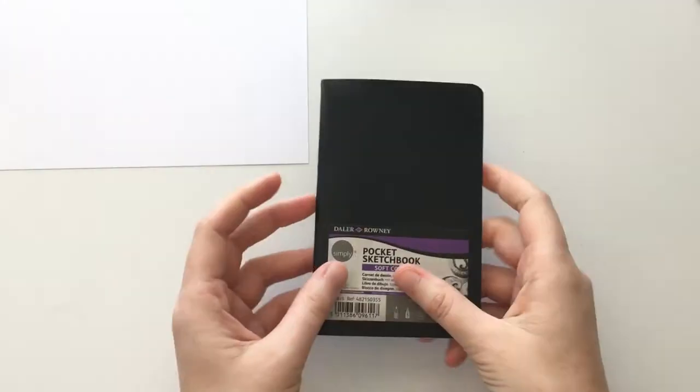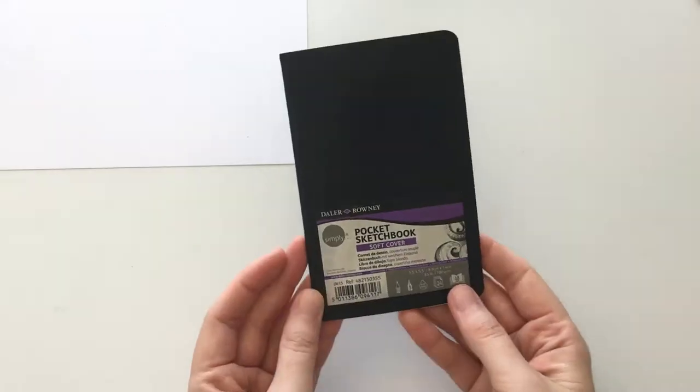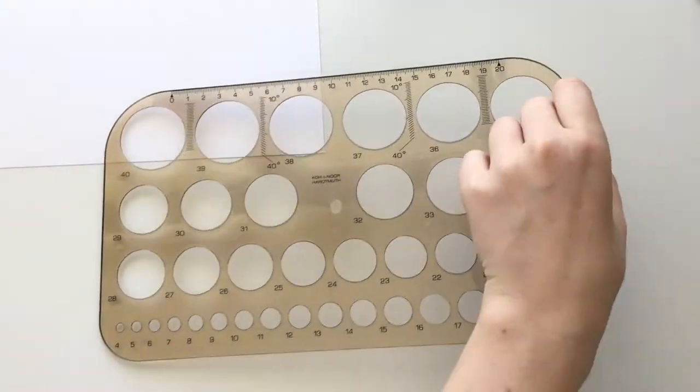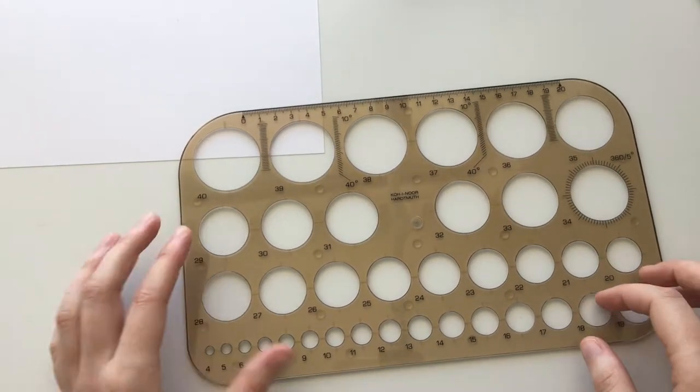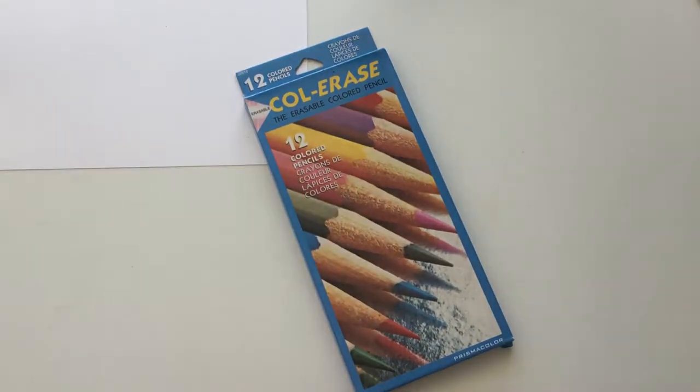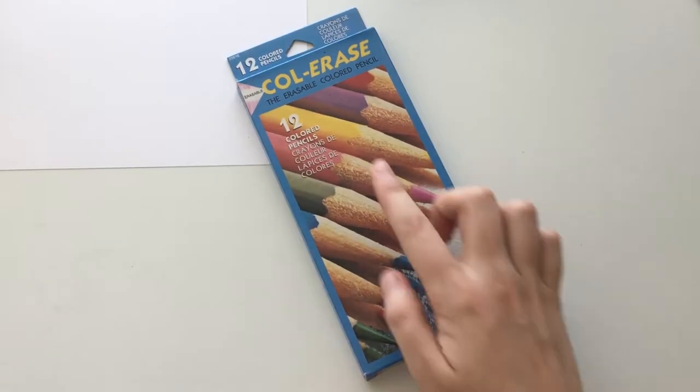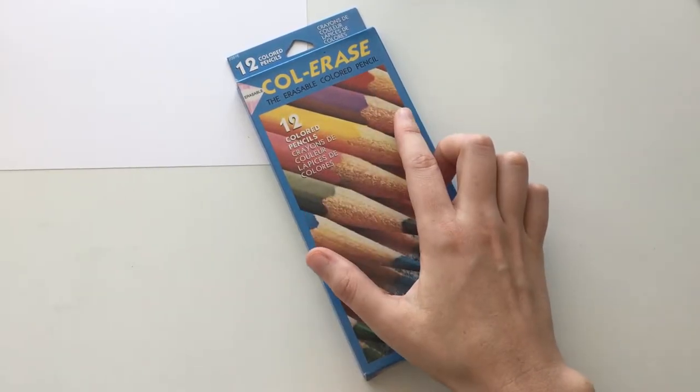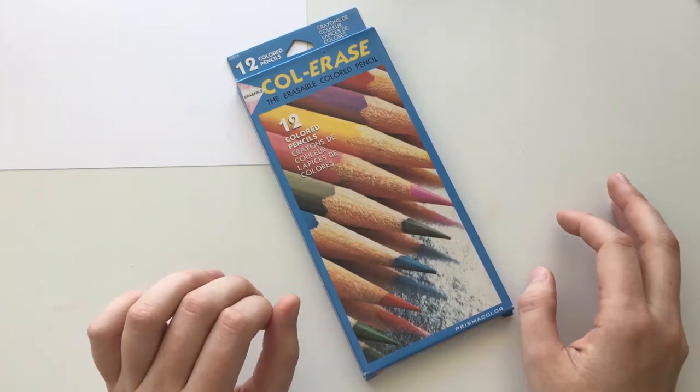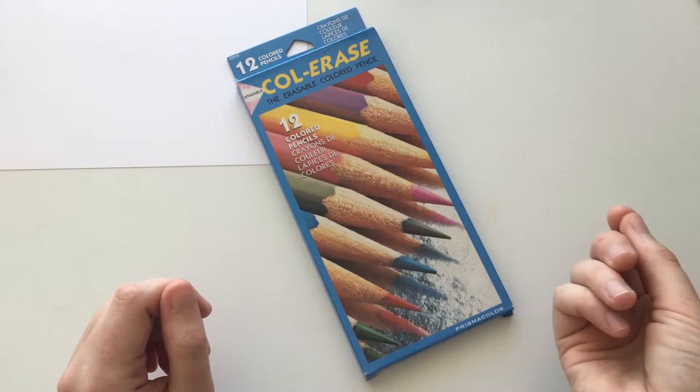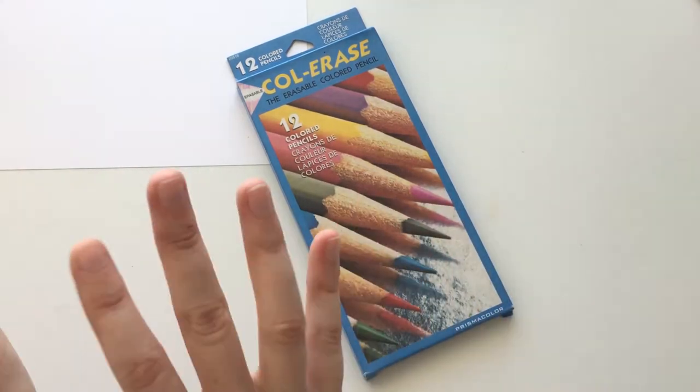The next thing I bought, a circle stencil. Upside down, so this was only a couple of dollars, and it's just a circle template. Next I bought a set of these Prismacolor colorrase erasable color pencils. I've never managed to get my hands on these before, but I've seen so many people use it to do their under sketch rather than using graphite because graphite can smudge.